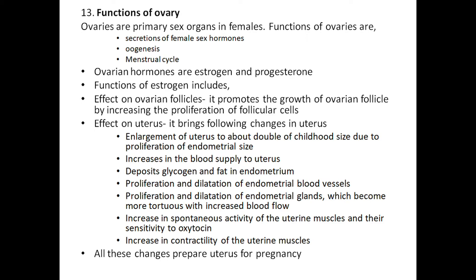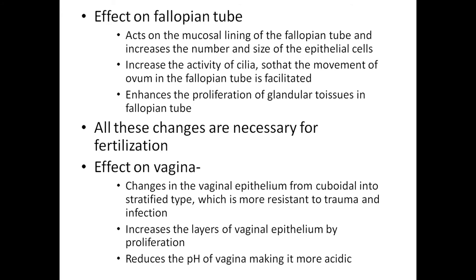Effect of estrogen on the uterus: brings about enlargement of uterus to double the childhood size, increases blood supply to the uterus, deposits glycogen and fat in the endometrium, causes proliferation and dilatation of endometrial blood vessels, and increases spontaneous activity of uterine muscles and their sensitivity to oxytocin. All these changes prepare the uterus for pregnancy. Effect on fallopian tube: acts on mucosal lining, increasing number and size of epithelial cells and enhancing proliferation of glandular tissues — all necessary for fertilization.